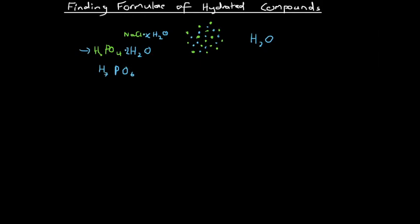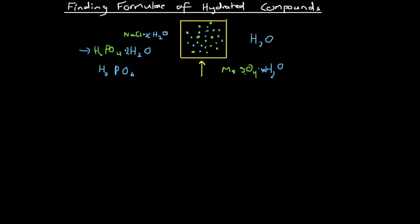Let's say I'm given this compound — someone hands me a pile of this stuff and tells me I've got magnesium sulfate and it's hydrated. This is an example of how we figure out what the x value is, given that we're told something's hydrated. I want to work out how hydrated it is — basically find the value of x in the empirical formula with the hydration tacked on, or the number of water molecules for every magnesium and sulfate ion in this sample.